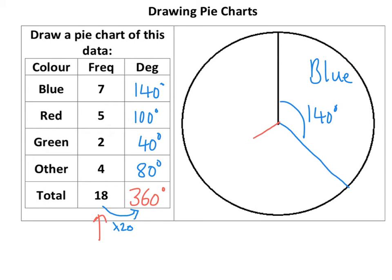So I'd go 100 degrees and I would do red. And then finally, green was 40 degrees, so we go to about there. So we got 40 and we got green. And this should be 80. Measure it just to make sure. That would be other.